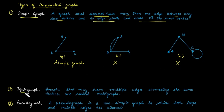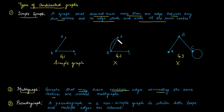The next category is a multigraph. A multigraph means a graph that may have multiple edges connecting the same vertex. Multiple edges are allowed in the case of a multigraph, but no self-loop is allowed. Clearly, graph G2 is a multigraph because multiple edges are present between vertex A and B.